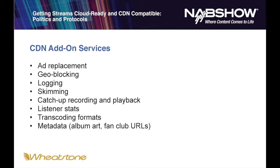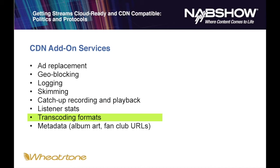The CDN, because it is receiving all of your stream and knows who's listening, can give you statistics on who's listening, what they're listening to, how long, and where they are. The CDN can also transcode formats — they can change bit rates on your stream, and can take things like an IceCast stream and turn it into a multivariant HLS stream. They can also provide more information about the music being played — for example, adding URLs for a fan club store, album art, and other services.